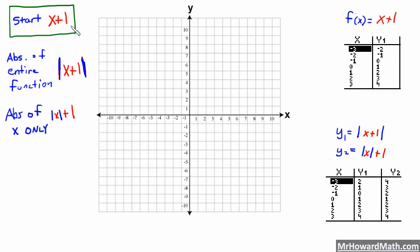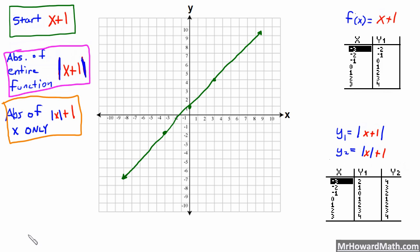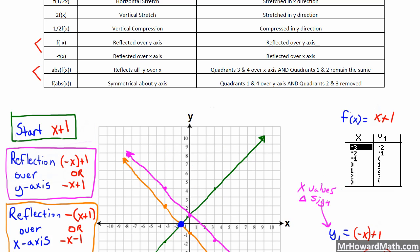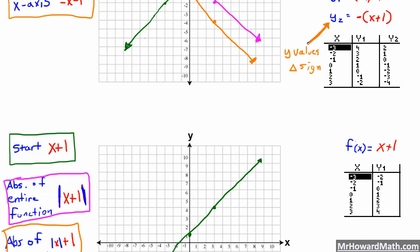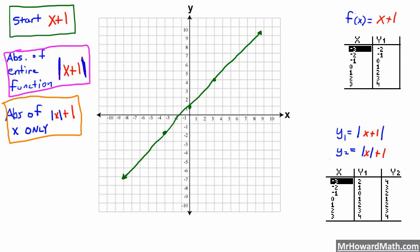We are again going to start with the line X plus 1, so let's get that graphed quickly. I've gone ahead and graphed our starting function so that we can move forward. The absolute value of our entire function is what we're going to do first — we've got the absolute value of the whole thing. Up in our chart that would be this section right here. So we are going to reflect all negative Y's over the X-axis, meaning quadrants 3 and 4 are over the X-axis and quadrants 1 and 2 remain the same.